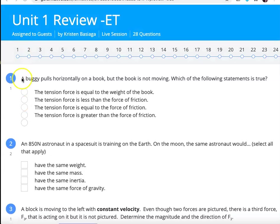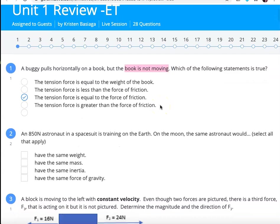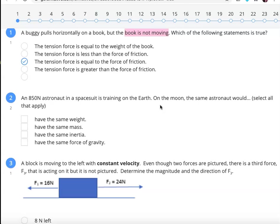Let's get started. Number one, a buggy pulls horizontally on a book, but the book isn't moving. Which statement is true? I had tension is equal to the force of friction. And the reason I know this is true is because tension and friction would both act in the x direction. Weight does not, so it cannot be A. And the forces have to be equal because the book is unmoving. This is in static equilibrium, so the forces that pull left equal the forces that pull right. It's not the force that pulls right equals the force that pulls down. So it can't be gravity. It can't be weight.